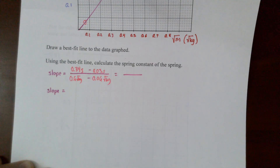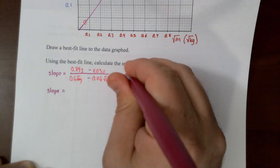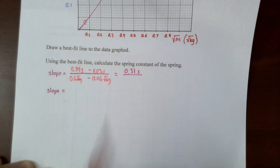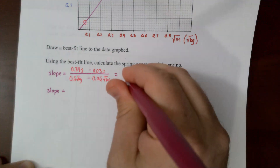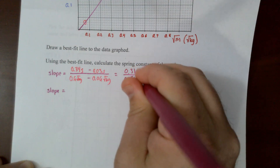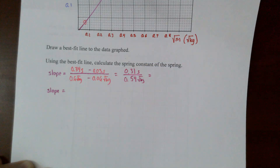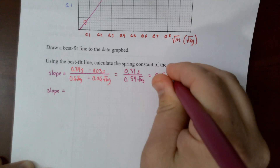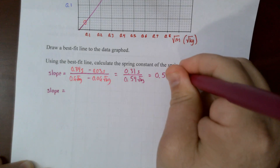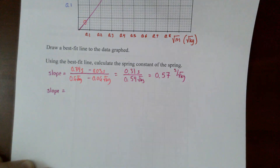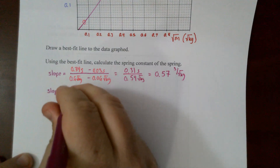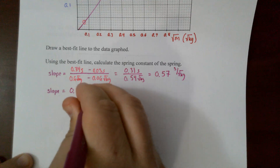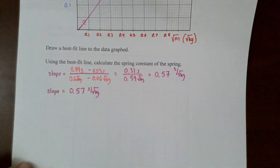Computing the slope: the numerator is 0.34 − 0.03 = 0.31 seconds; the denominator is 0.60 − 0.06 = 0.54 √kg. Dividing gives 0.31 / 0.54 = 0.57. So our slope is 0.57 seconds per √kg.